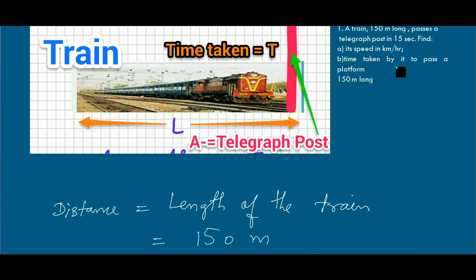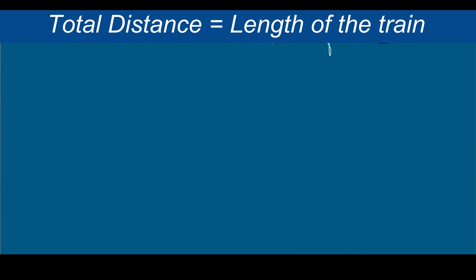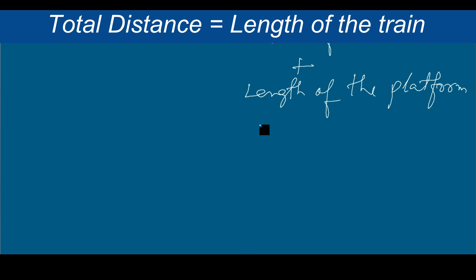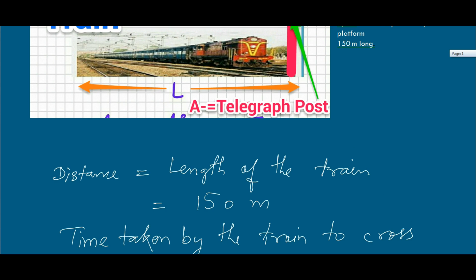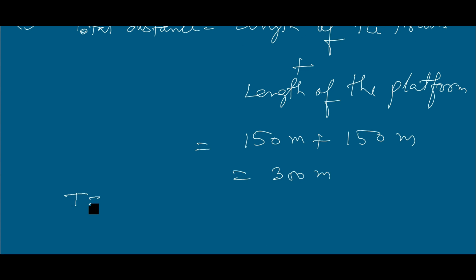For the second part, we need the time taken to pass a 150-meter platform. In this case, the total distance becomes the length of the train plus the length of the platform: 150 meters plus 150 meters equals 300 meters. We use time equals distance divided by speed, and we know speed is 10 meters per second.